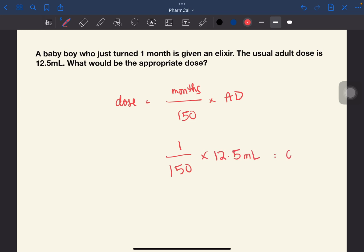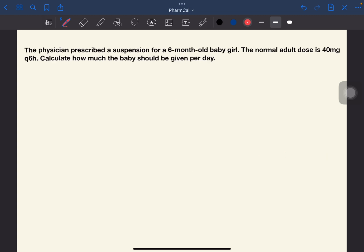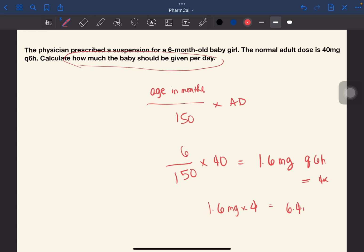The physician prescribed a suspension for a 6-month-old baby girl. The normal adult dose is 40 mg every 6 hours. Calculate how much the baby should be given per day. We will use Fried's rule: age in months over 150 times the adult dose. So 6 over 150 times 40 mg equals 1.6 mg. However, the question asks how much the baby should be given per day. Every 6 hours is equivalent to 4 times a day. So 1.6 mg times 4 equals 6.4 mg per day.